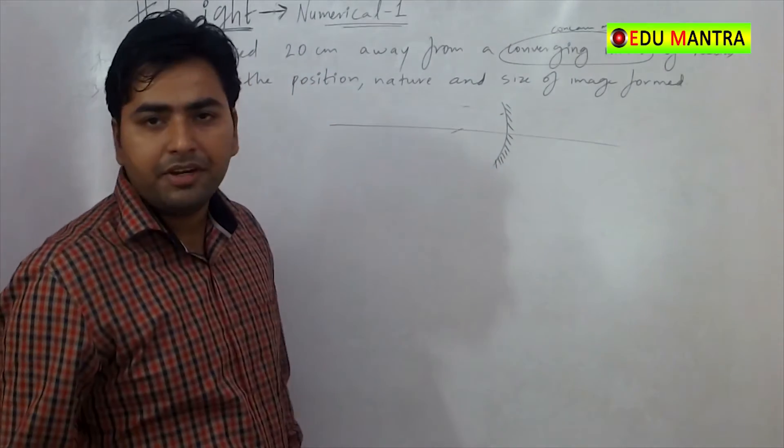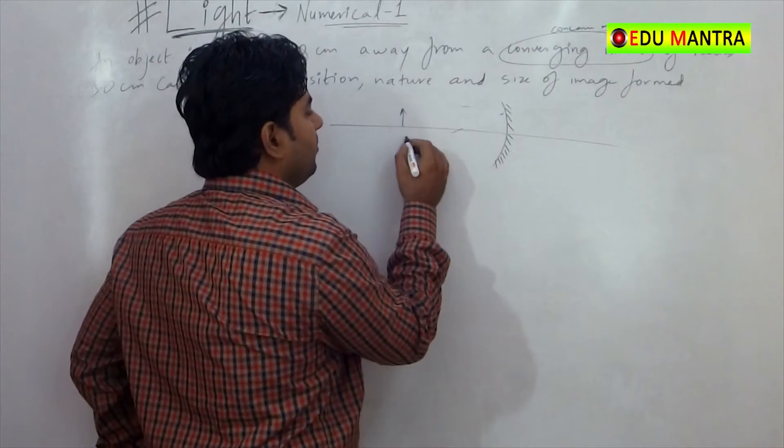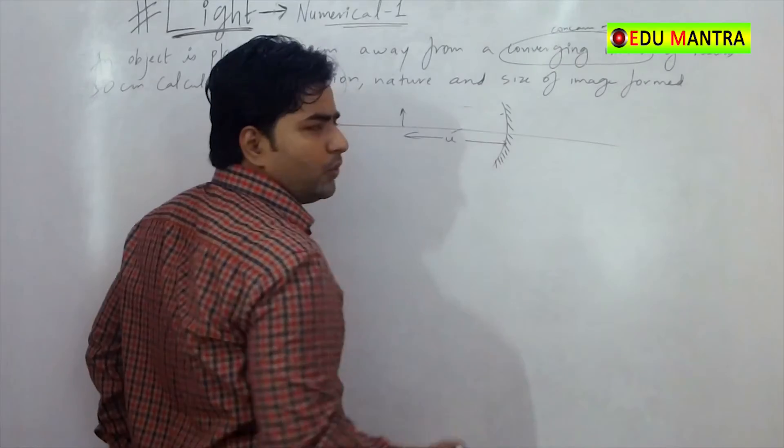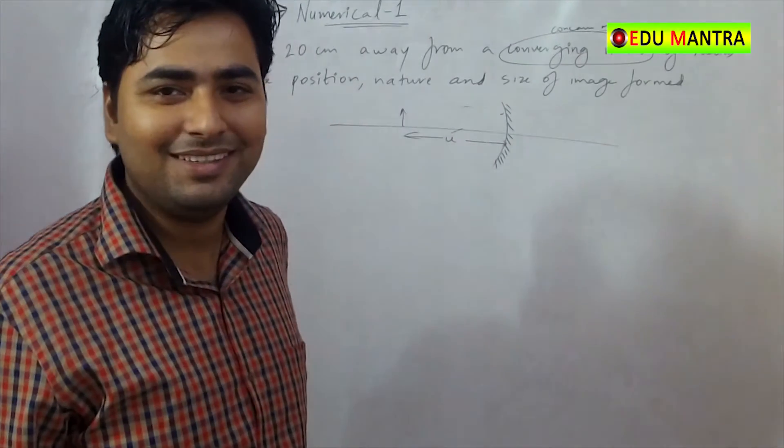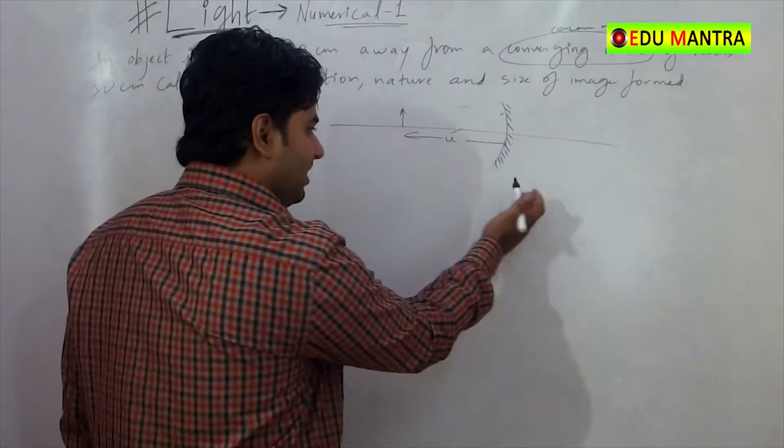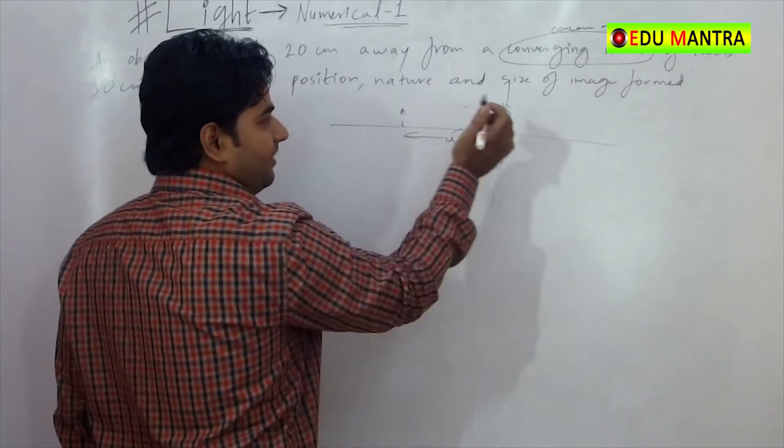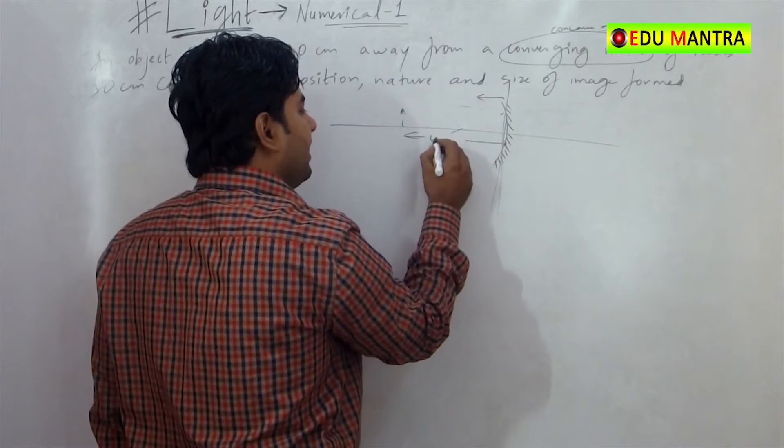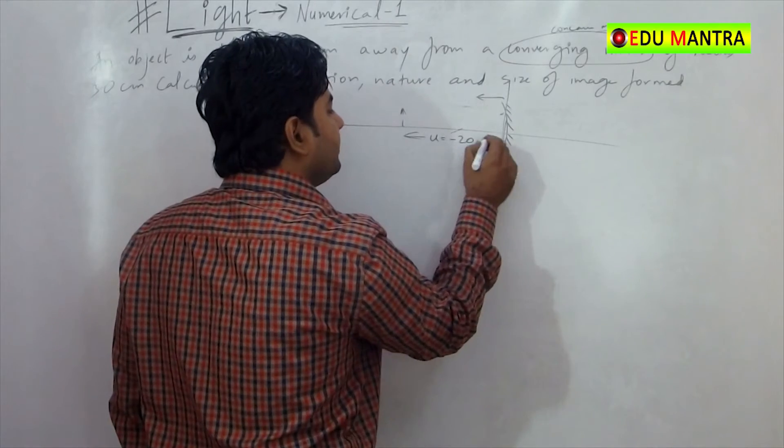So, the object is placed at 20 cm. What is the object distance? What is the value of u? It is 20 cm. Is it 20 or minus 20? Yes, my sign convention is left side. It is always negative. So, u will be minus 20 cm.